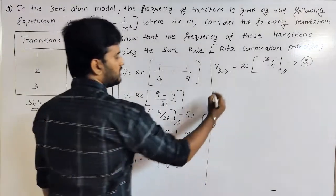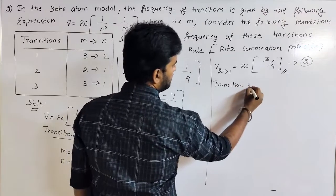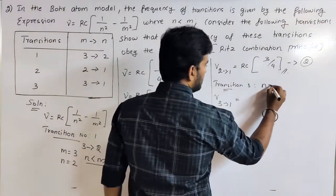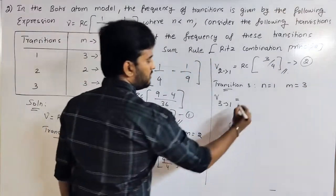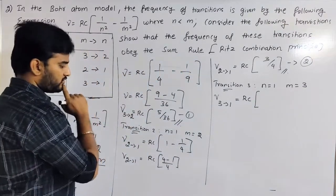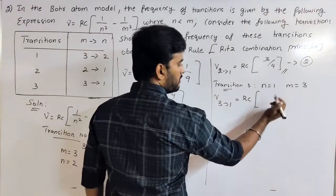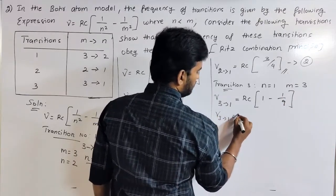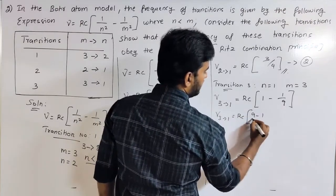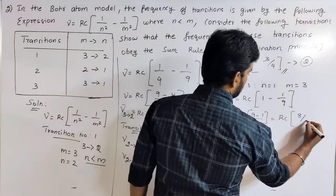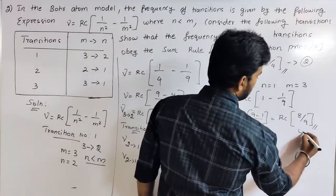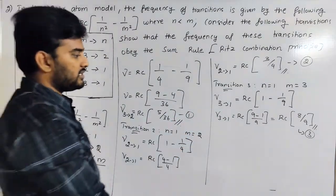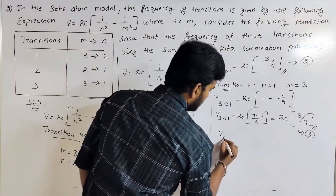Transition number 3: third state to first state, so n equals 1 and m equals 3. Substituting: nu equals RC times (1/1 squared minus 1/3 squared) equals RC times (1 minus 1/9) equals RC times (9 minus 1)/9 equals RC times 8/9. This is the third equation.